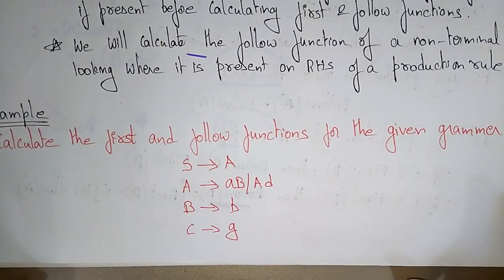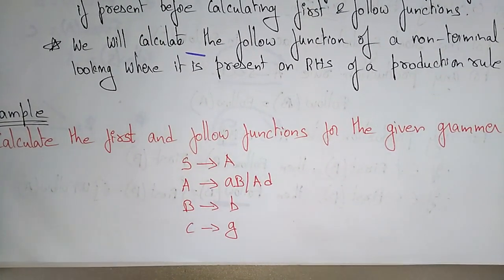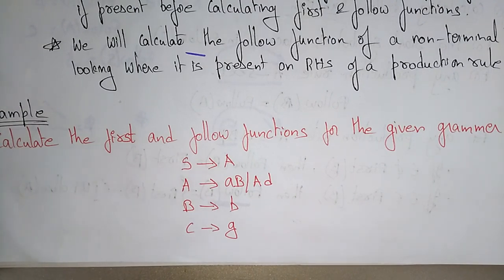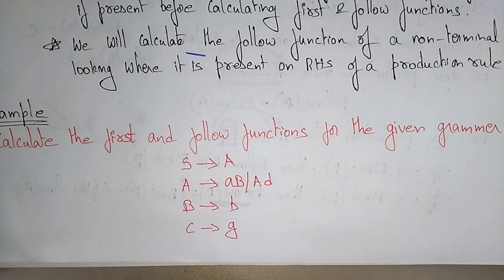Let's see an example to calculate the FIRST and FOLLOW functions for a given grammar. This is used to construct the LL(1) predictive parser. In an LL(1) predictive parser, the first thing you need to do is calculate the FIRST function and the FOLLOW function, after which you construct the table, stack implementation, and parse the string.